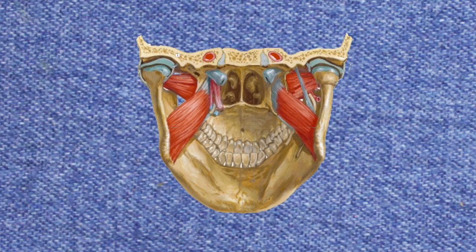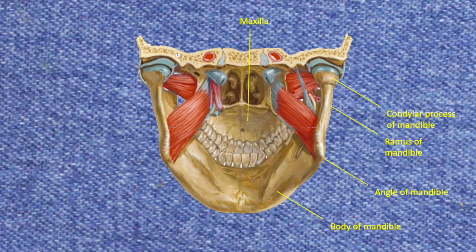The pterygoid muscles are difficult to appreciate in one's first dissection. Also, during the removal of the ramus of the mandible, the pterygoid muscles are often injured. Consequently, a drawing of the muscles as observed from behind the mandible has been added. We can label the body of the mandible, the angle of the mandible, the ramus of the mandible, and the condylar process. Moving to the left side of the image, we can observe the two heads of the lateral pterygoid and the medial pterygoid muscle. These are muscles of mastication and they can move the lower jaw from side to side as well as help protrude and retract the lower jaw.